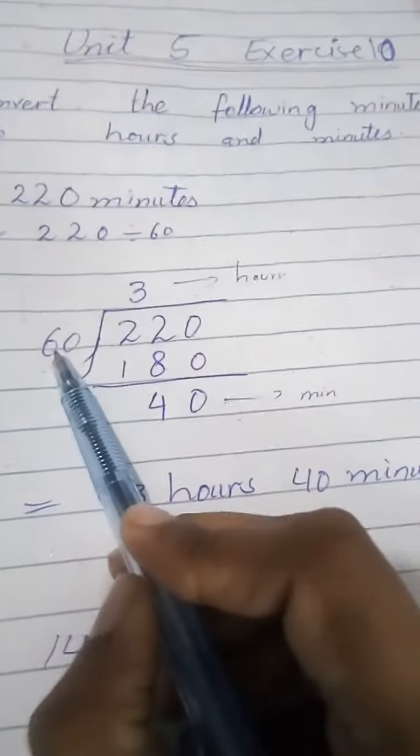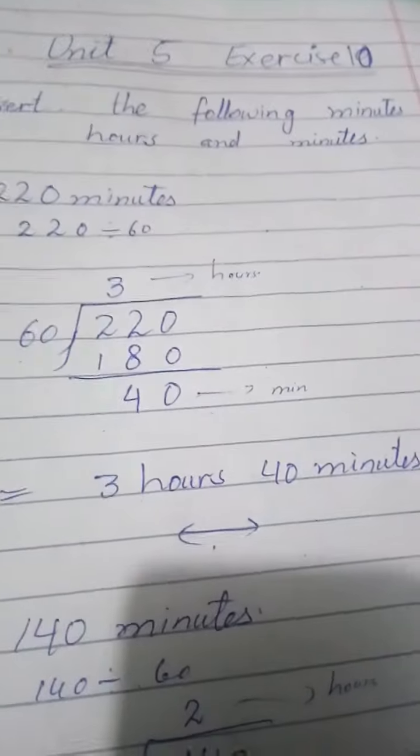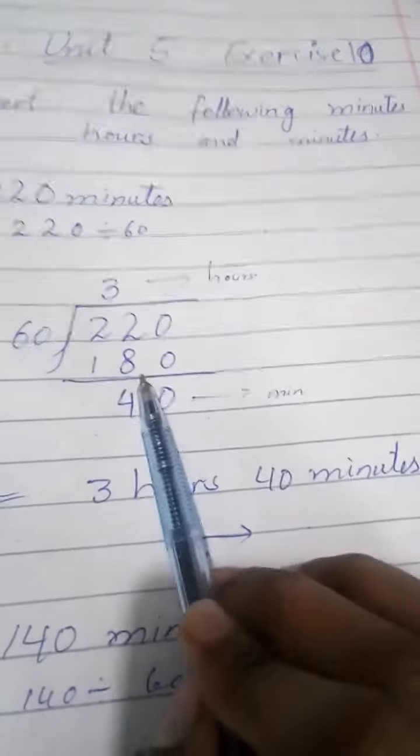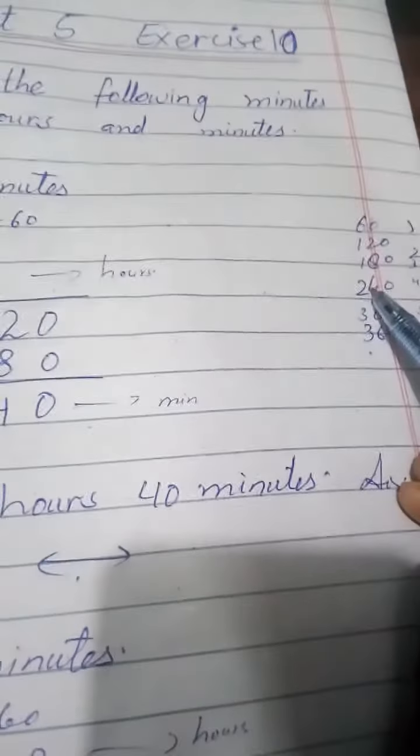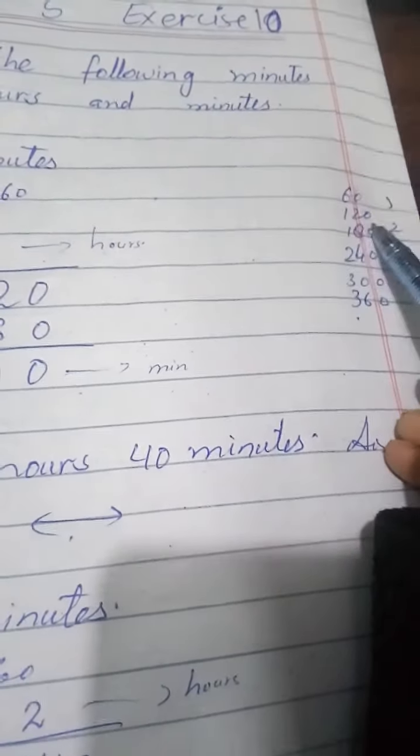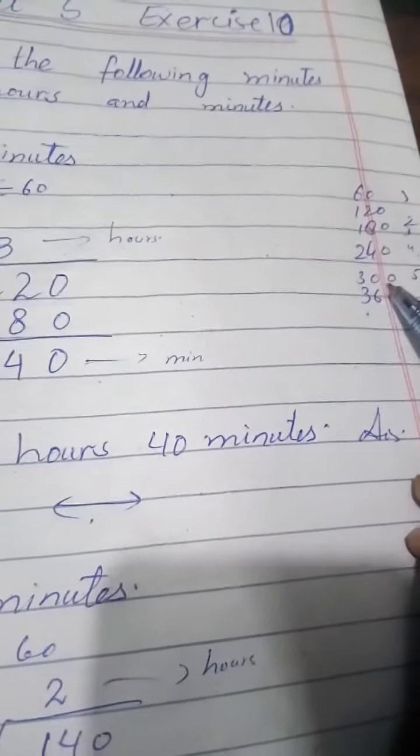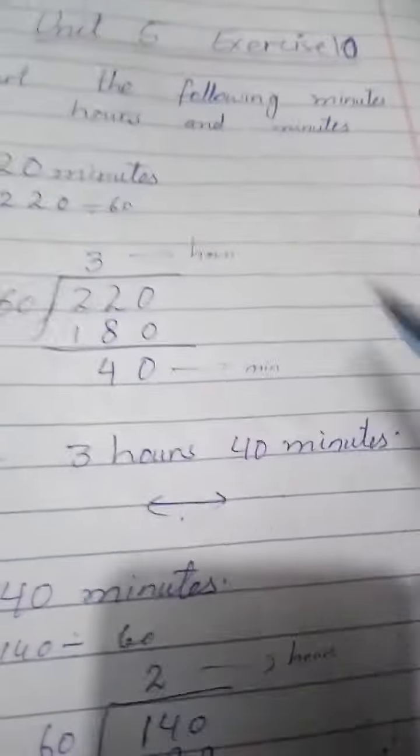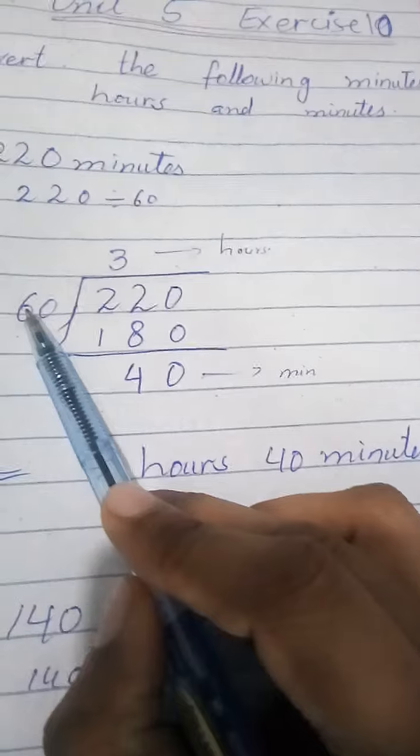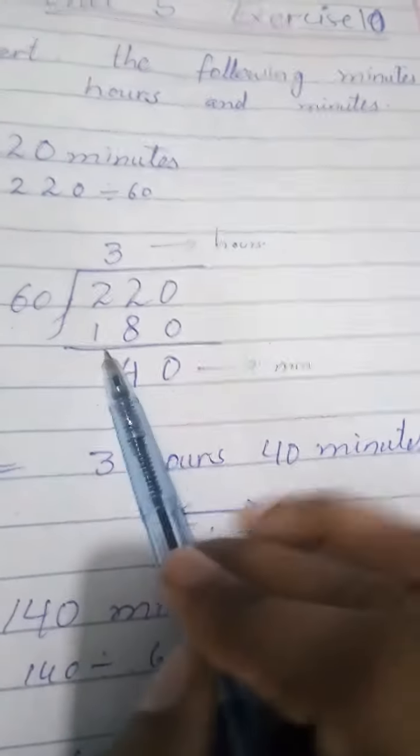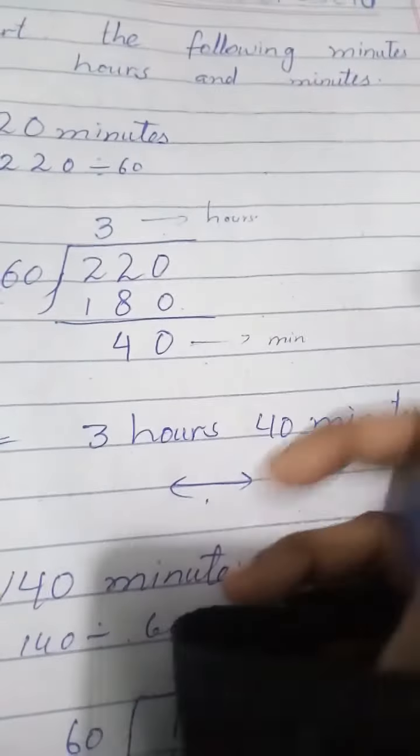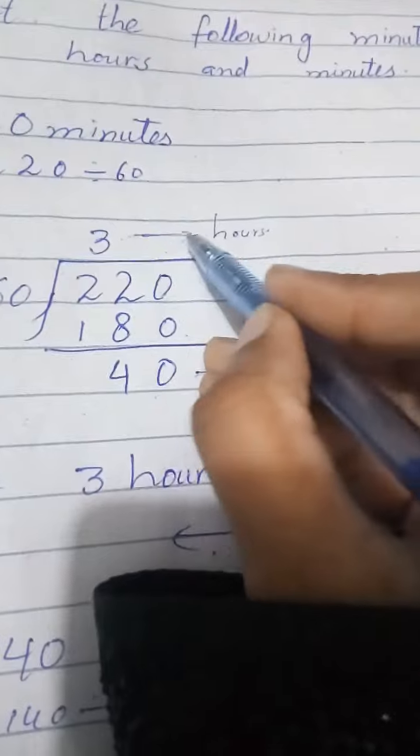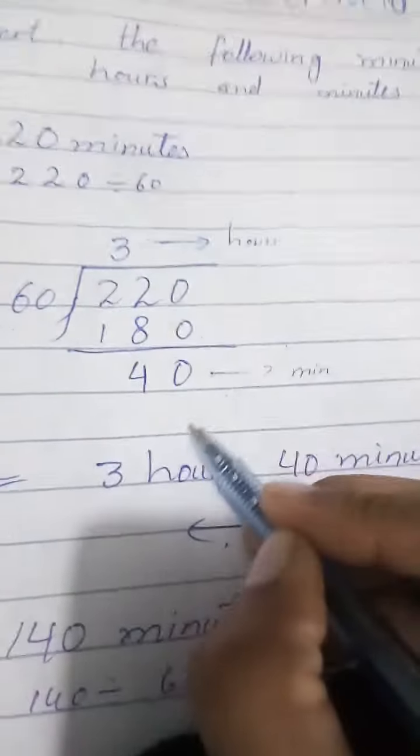Multiply 60 by 3, we get 180. If we multiply by 4 we get 240. 60 times 2 is 120, 180, 240, 300, and 360. So we multiply by 3. 60 times 3 is 180. Now subtract them, we get 40. So the answer is 3 hours.